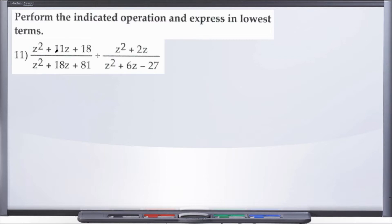So we have z squared plus 11z plus 18. We're dealing with a trinomial — three terms — so we know this is going to factor into two binomials. The coefficient in front of our squared term is 1, which makes it a little easier. It breaks into (z + ?)(z + ?). We're looking for factors of 18 that add to positive 11 — that's plus 9 and plus 2, since 9 plus 2 is 11 and 9 times 2 is 18.